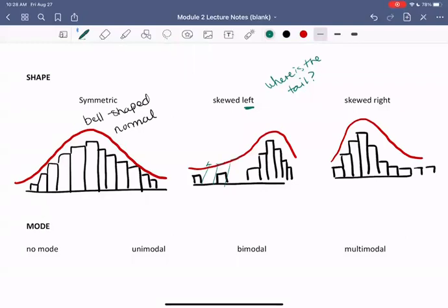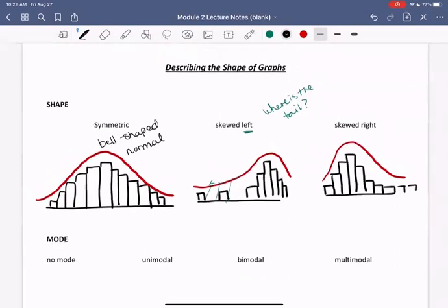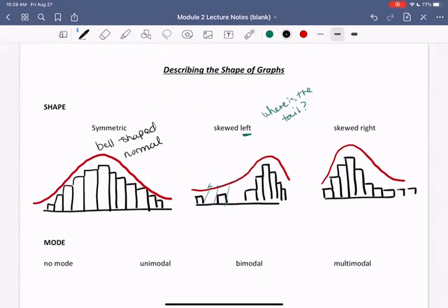Also when describing data, we have a sense of mode. Or rather, we talk about the mode of a graph or of the data. Mode is often just a word used for the most frequent data values, the data that comes up the most often.